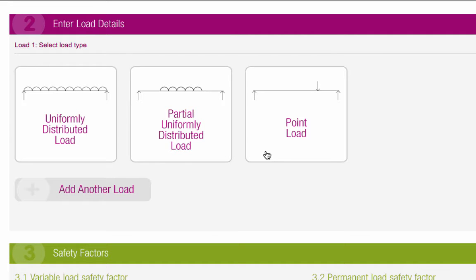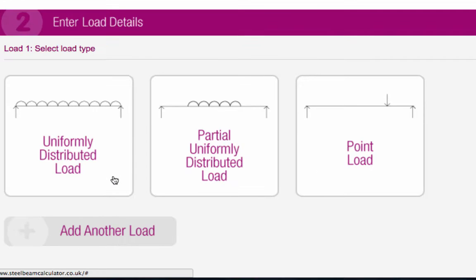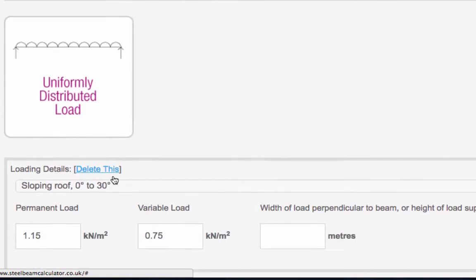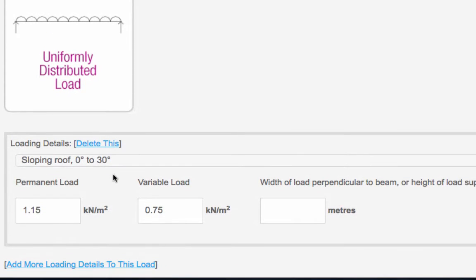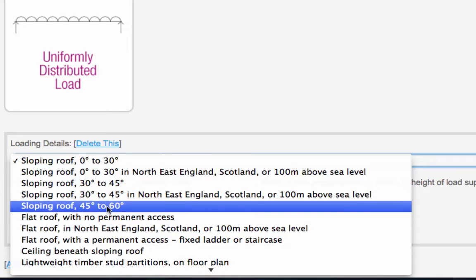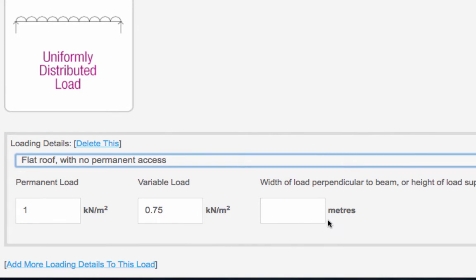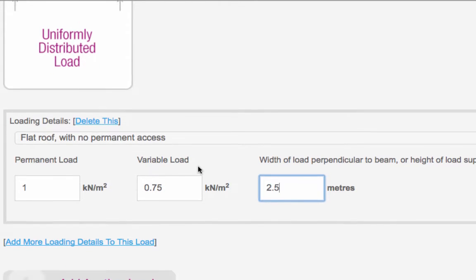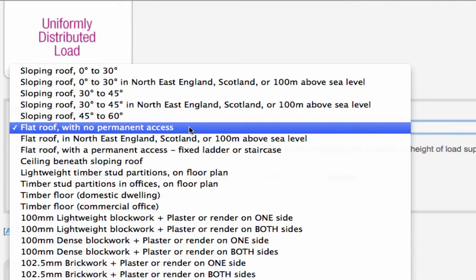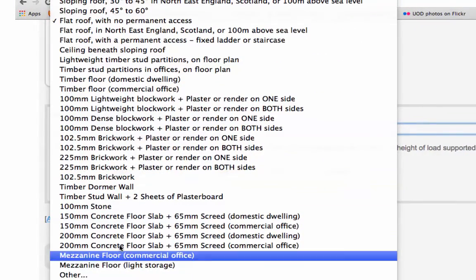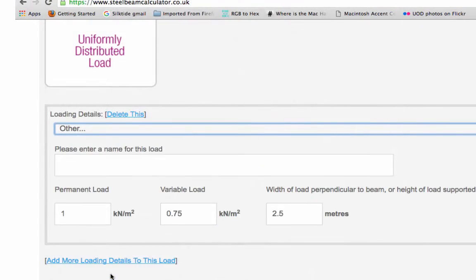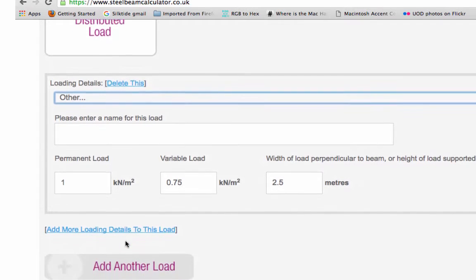If you choose either uniformly distributed load or partial uniformly distributed load, you can select the loading details from the dropdown menu and then enter the width or height of the load. Use 'other' if you can't see an option that describes the nature of your load. You don't need to add the weight of the steel beam itself. The calculator automatically allows for this.